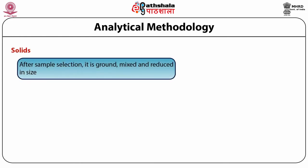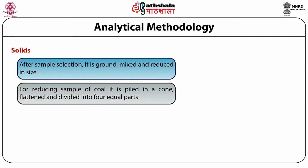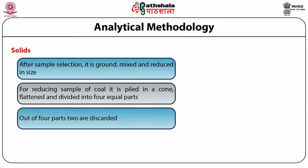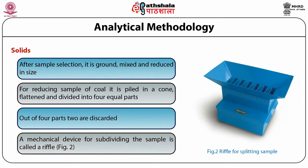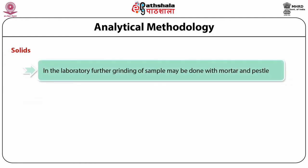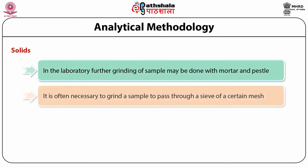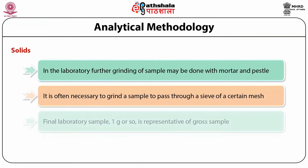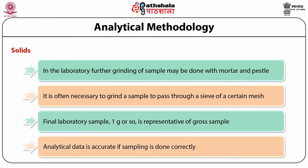After the sample has been selected, it is ground, crushed, systematically mixed, and reduced in size. One method involves piling it in a cone with a shovel, flattening the cone, and dividing it into four equal parts, two of which are discarded. A mechanical device for subdividing the sample is called a riffle. In the laboratory, further grinding may be done with a mortar and pestle, and it is often necessary to pass the sample through a sieve of a certain mesh size. One hopes the final laboratory sample of about one gram is representative of the gross sample, since the analytical data cannot be better than the care exercised in sampling.